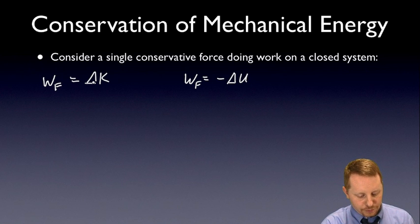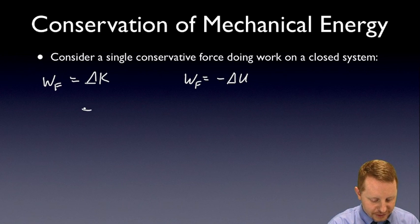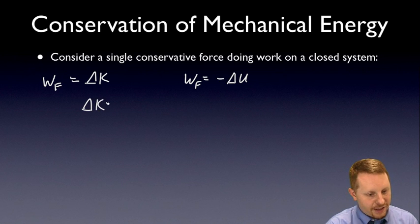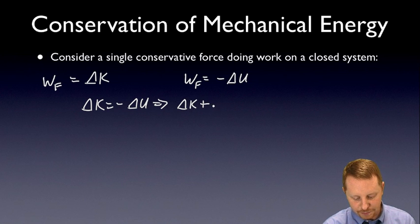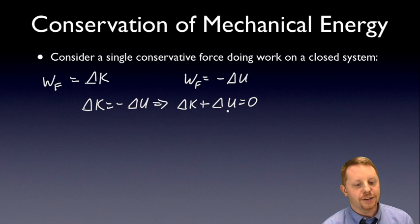So if we put those two together, if the work done by a conservative force is ΔK and the work done by a conservative force is -ΔU, it shouldn't be much of a stretch to say that change in kinetic energy is equal to the opposite of the change in potential energy. Therefore, we could write that ΔK + ΔU = 0. The sum of the kinetic and potential energies, also known as the mechanical energy, is constant for a closed system.